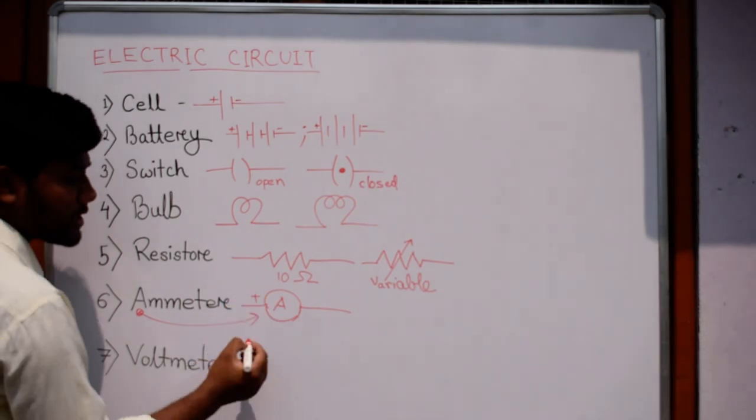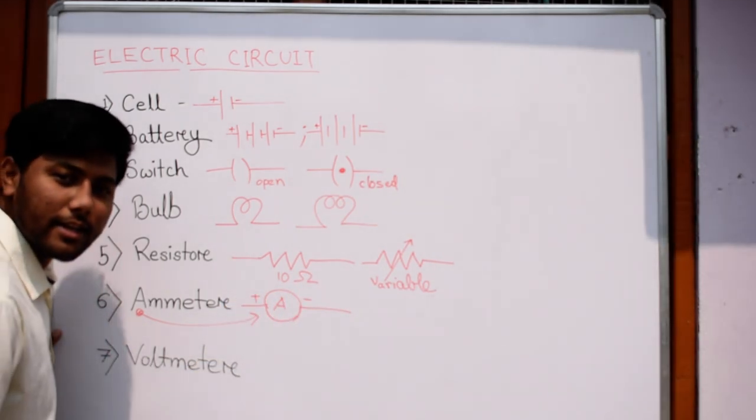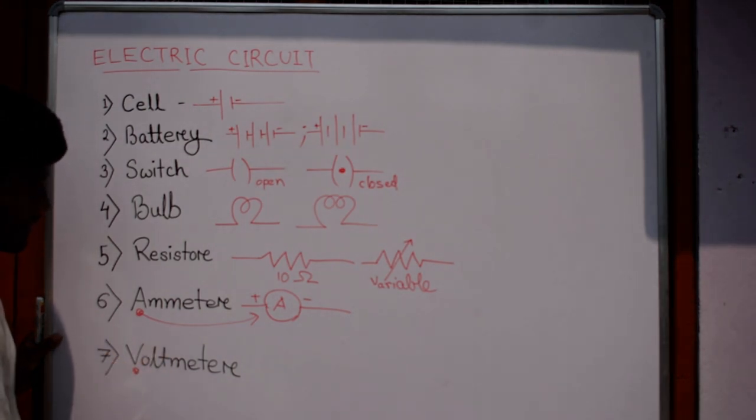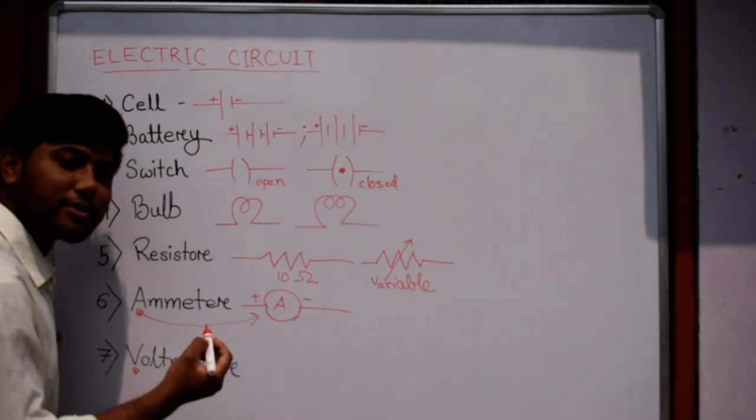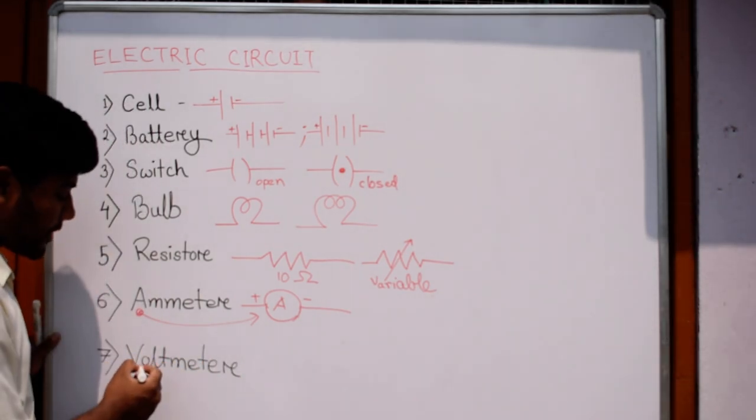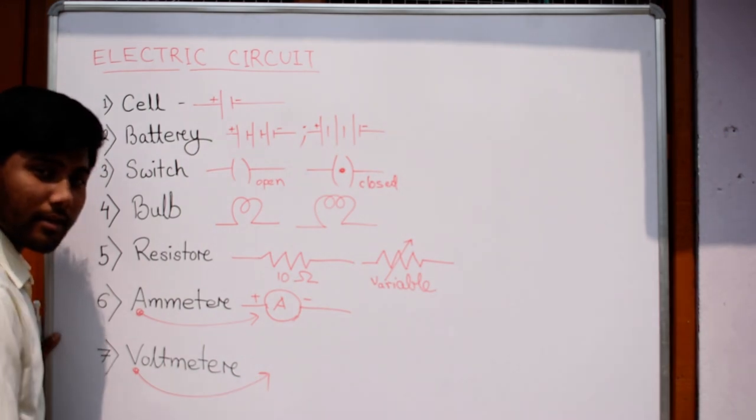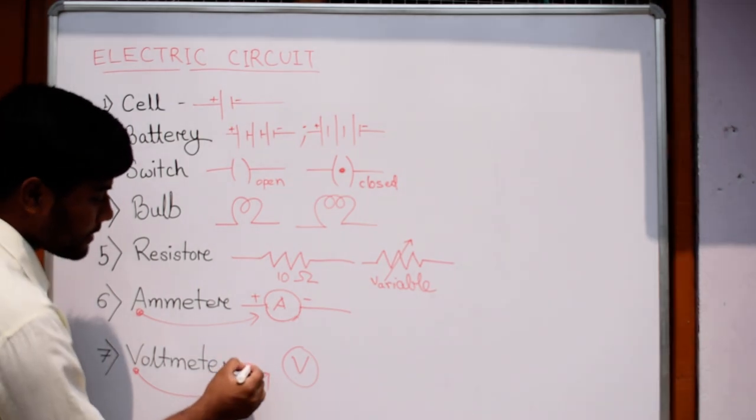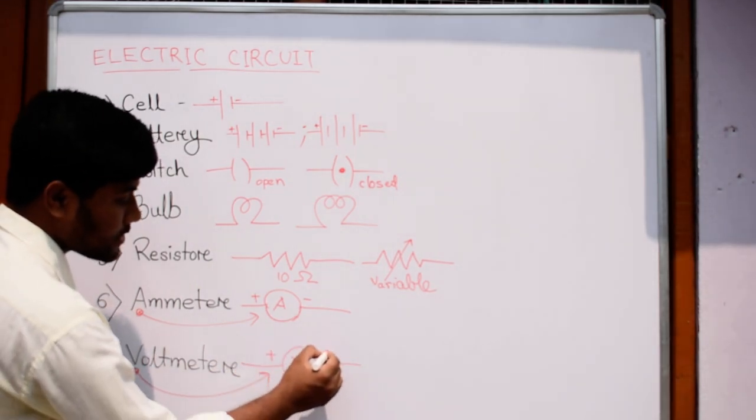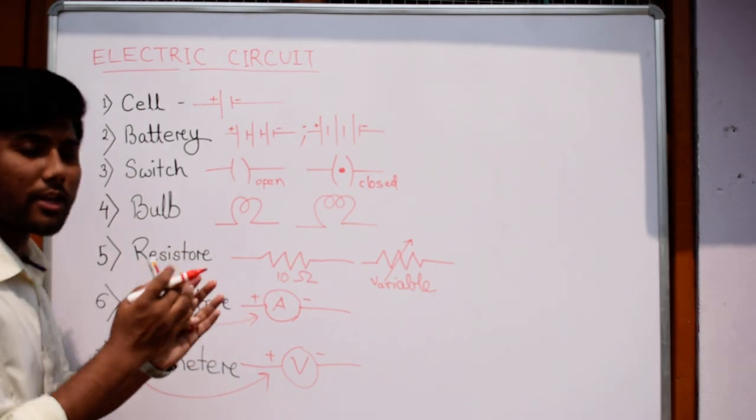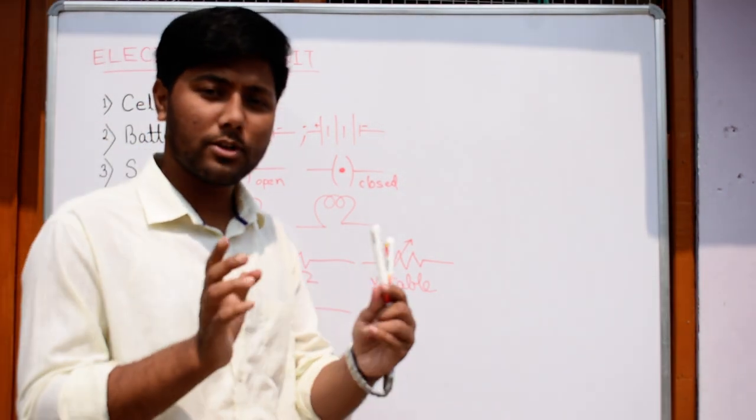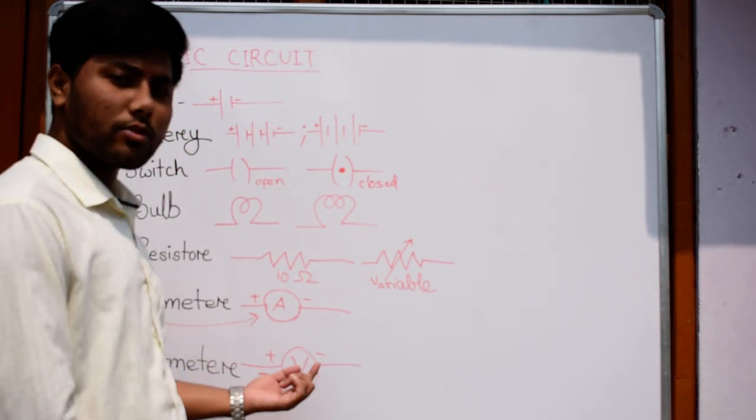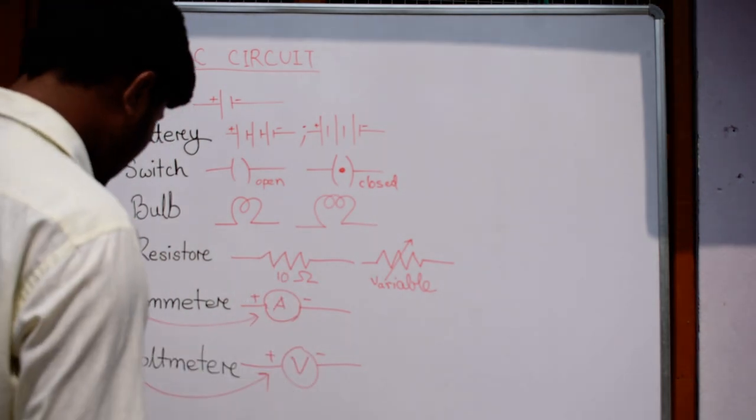We denote the ammeter by the symbol capital A. One side is positive, other side is negative. And lastly, the voltmeter. Voltmeter starts with the letter V, so the symbol is capital V. Voltmeter checks the potential difference between two points, or the voltage difference to measure.